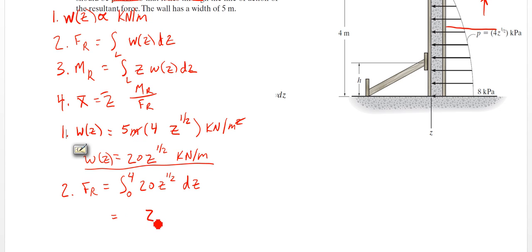So we're going to have a z to the 1.5 up here, and we're going to have 20 over 1.5 there. We're going from 0 to 4. So that's where we're evaluating. So at 4, it's going to be something, and we're going to subtract off what we have at 0, and that will give us our FR.